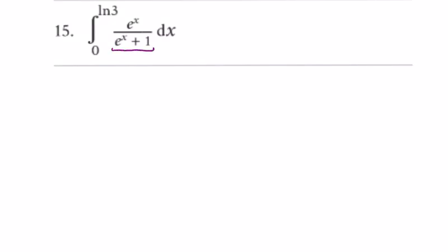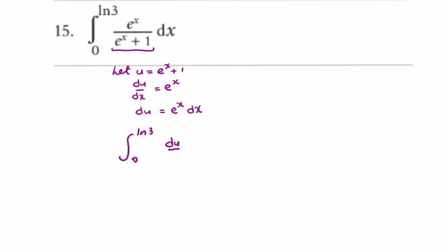Question 15. We let u equal e to the power of x plus 1, so du/dx is equal to e to the power of x, and du is equal to e to the power of x dx. So we're going to have the integral between ln 3 and 0 of e to the power of x dx, which is du, over e to the power of x plus 1, which is u.